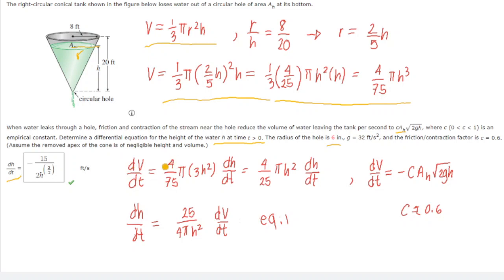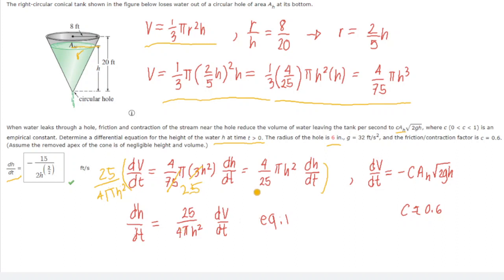Now let's differentiate this with respect to t to find our volume flow rate. dV/dt = (4π/75)·3h²·(dh/dt). We can cancel the 3 and 75 simplifies: 3/75 reduces, leaving (4π/25)·h²·(dh/dt). Solving for dh/dt by multiplying both sides by 25/(4πh²), we get dh/dt = (25/(4πh²))·(dV/dt). This is Equation 1.